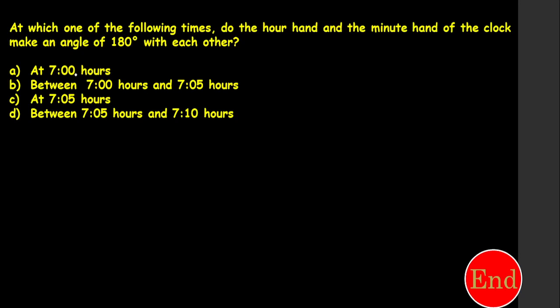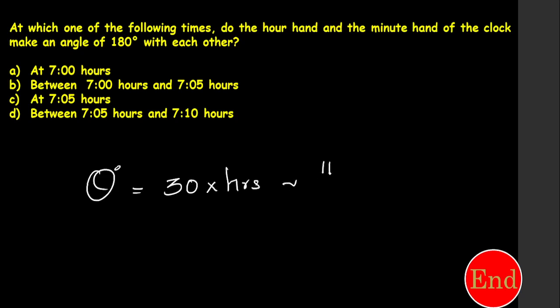The options involve 7 o'clock, 7 hours, and times between 7:05 and 7:10. We need to find where 180 degrees lies. The concept we need to know is: the angle theta is equal to 30 times the hours difference, minus 11 over 2 times the minutes.